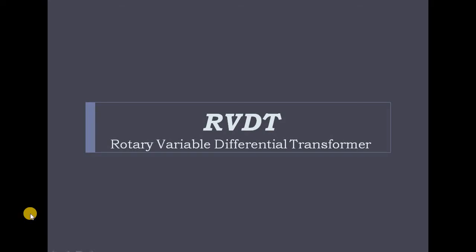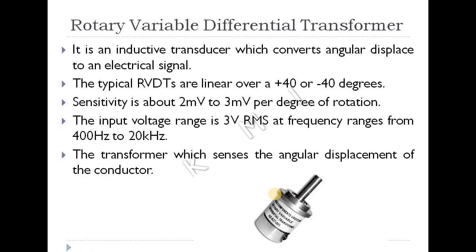Welcome. Today we are discussing the RVDT, a Rotary Variable Differential Transformer. In the last class we discussed the LVDT, that means linear displacement measurement — Linear Variable Differential Transformer. Both are similar, with only some differences. RVDT is an inductive transducer which converts angular displacement to an electrical signal. RVDT stands for Rotary Variable Differential Transformer — rotary means angular displacement.